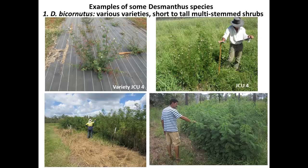I'll just briefly pick out three species to show you. The first is Desmanthus bicornutus, which comes in various sizes — mostly shrubby types, some short and some tall. The one on the top right is doing particularly well around Huwenden. The ones on the bottom at first glance might look like leucaena, but they're Desmanthus — growing up to a couple of metres tall but not becoming a tree and not getting woody.